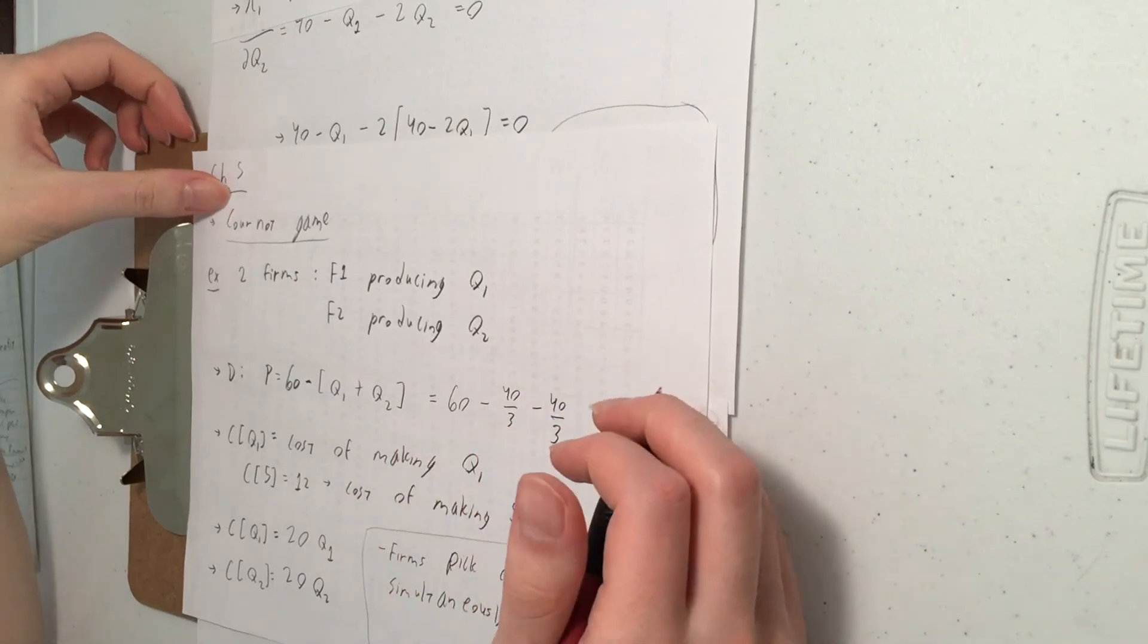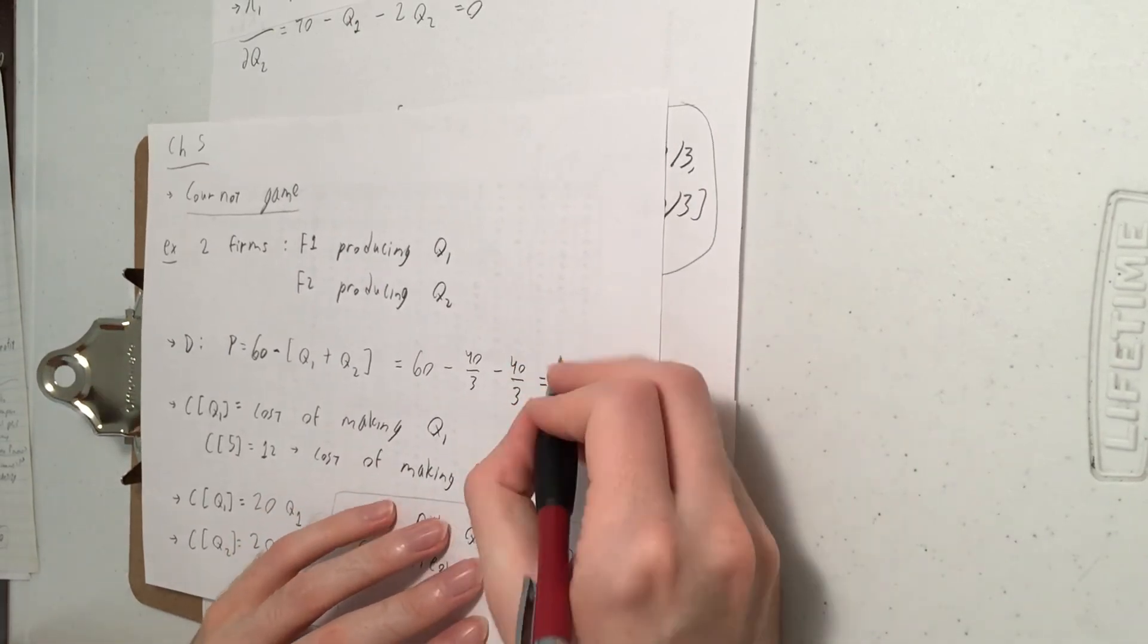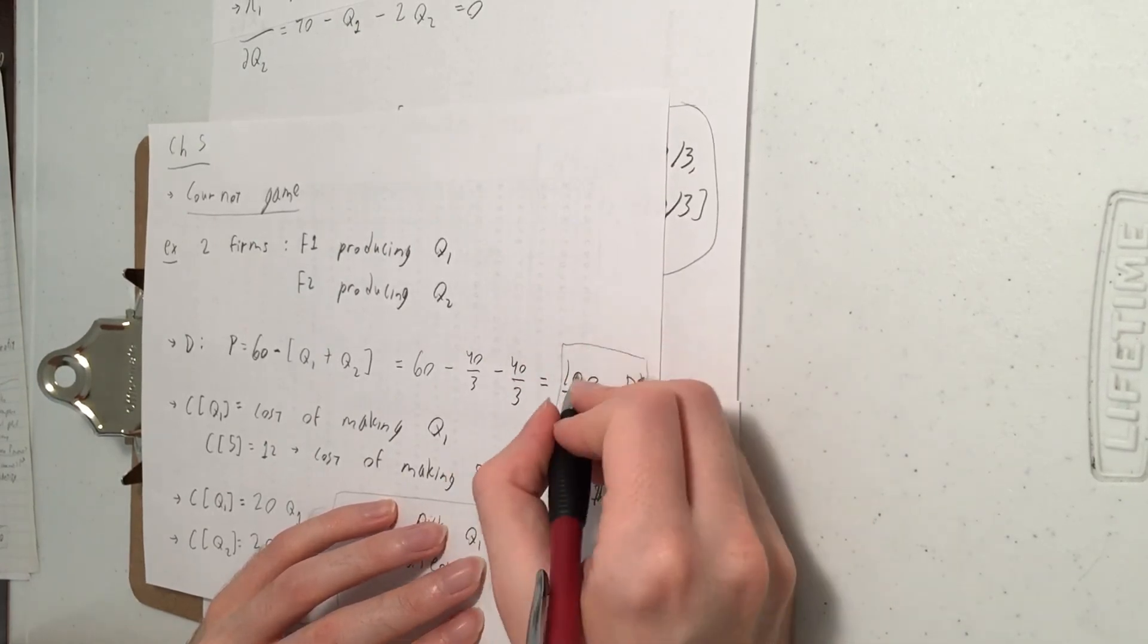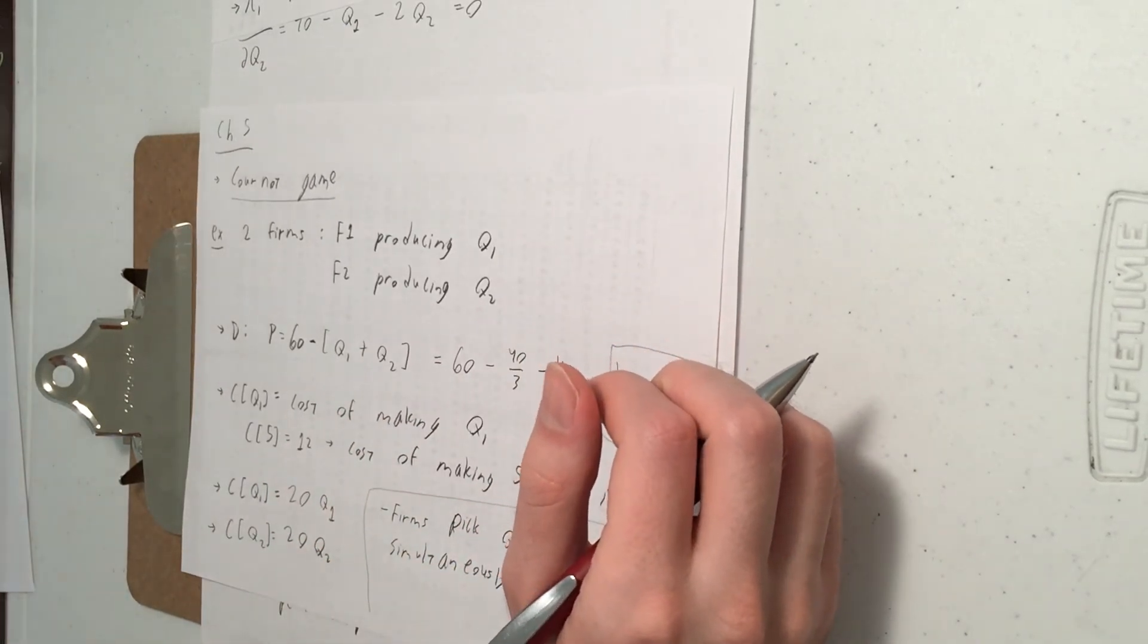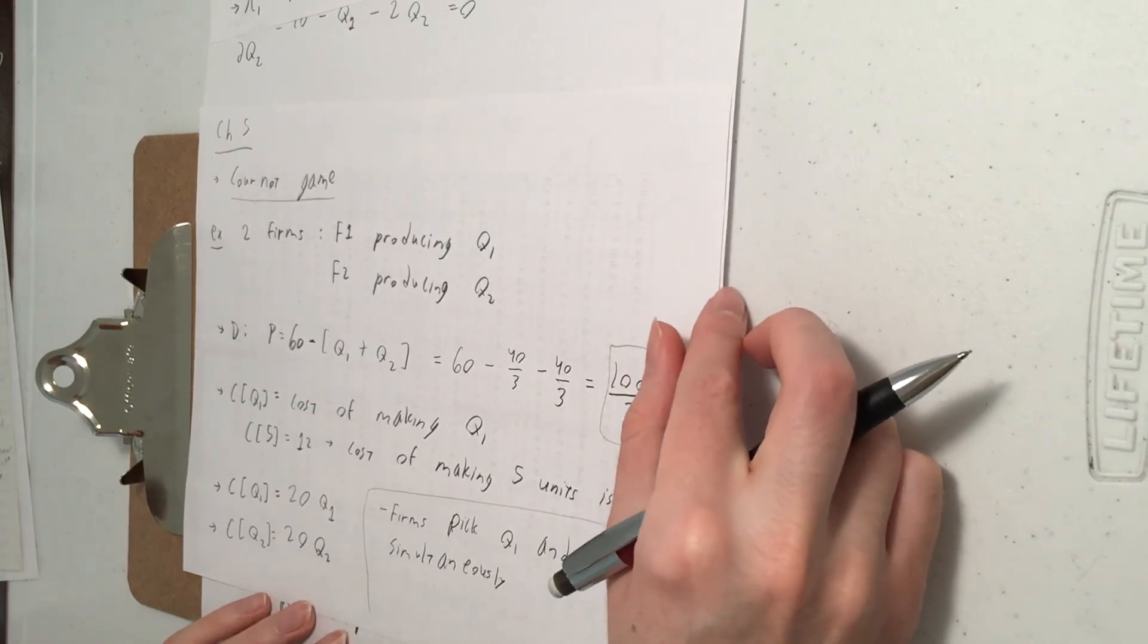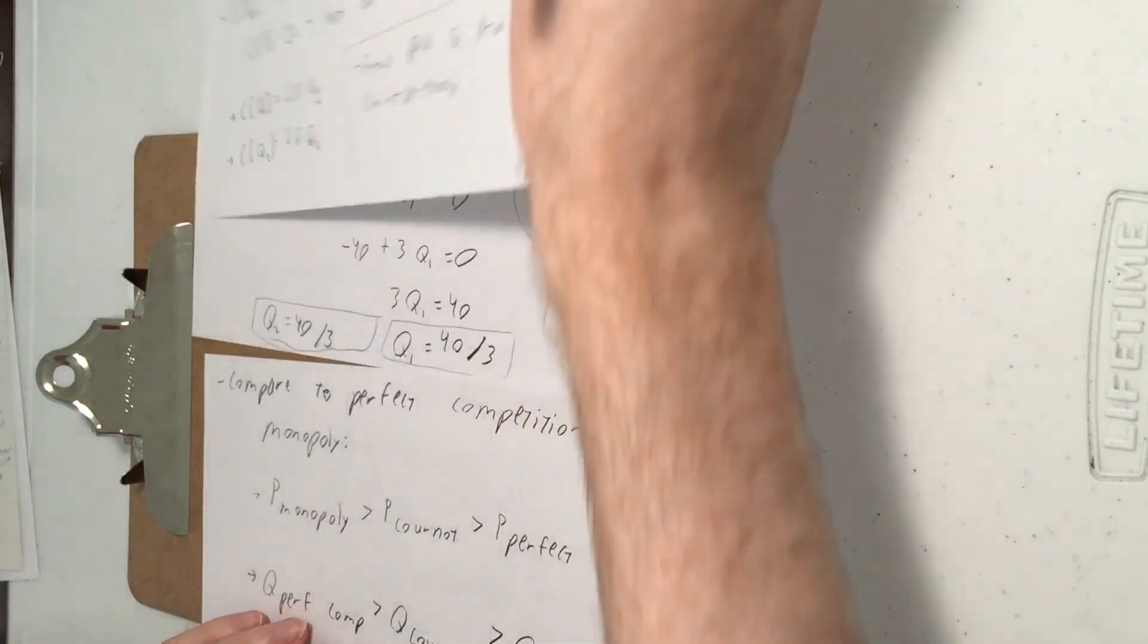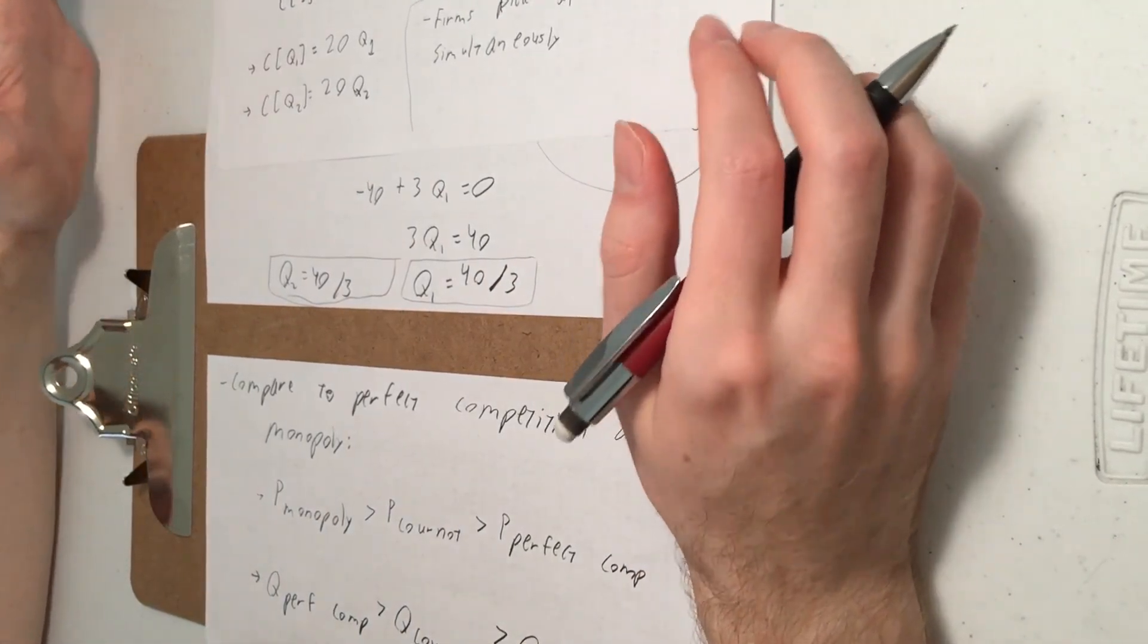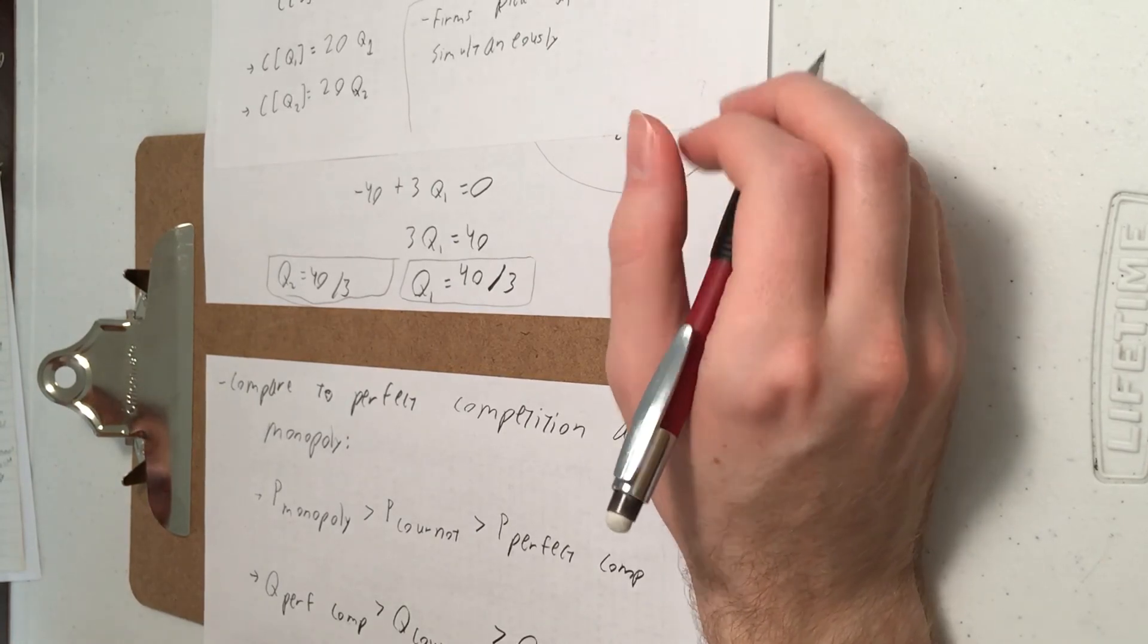So this will be 100 over 3. So there's the Cournot price. So let's do the monopoly and perfect competition outcomes in the next episode.